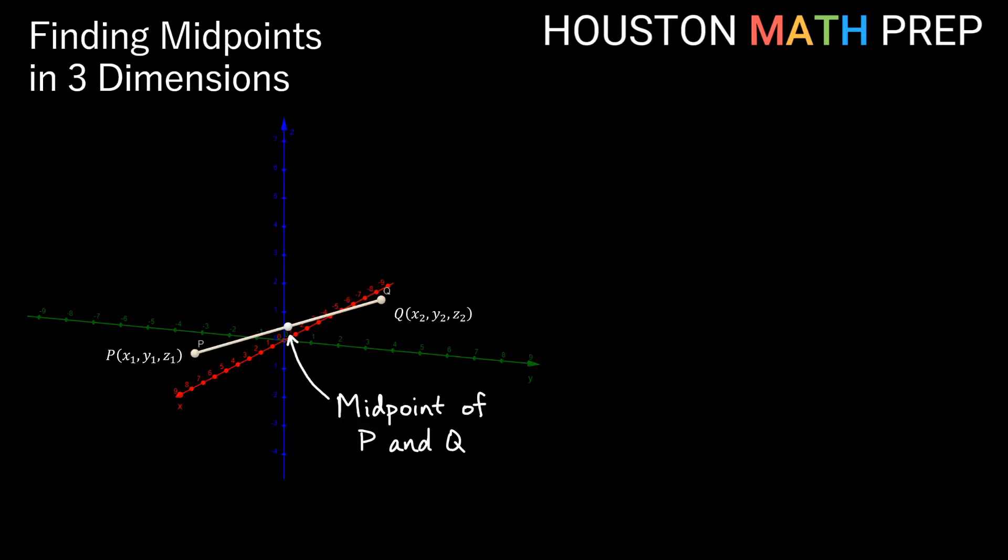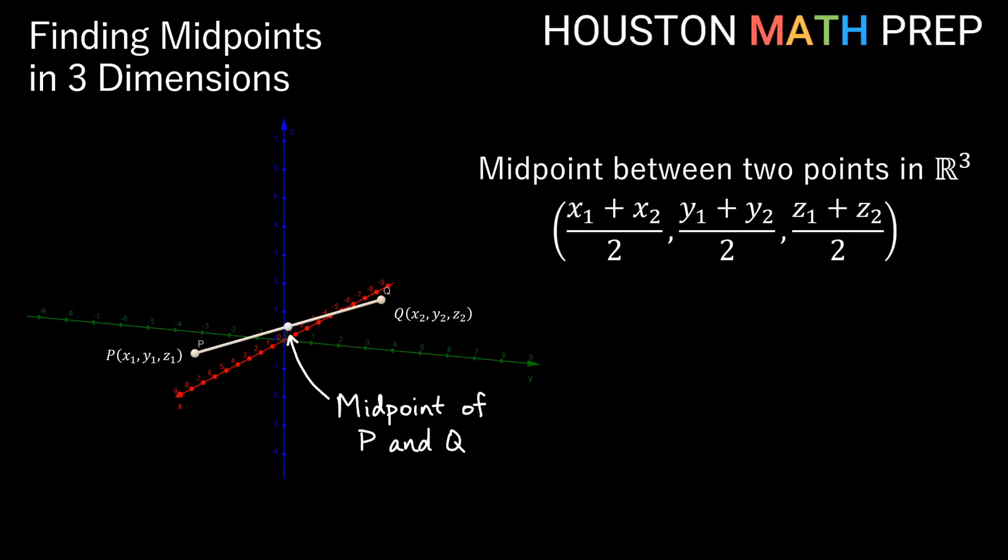Now remember the way we find what is halfway between two numbers is to simply take the average of those two numbers. So in other words, we add those two numbers up and divide by 2. So for the midpoint we'll just average each coordinate with its partner from the other point.